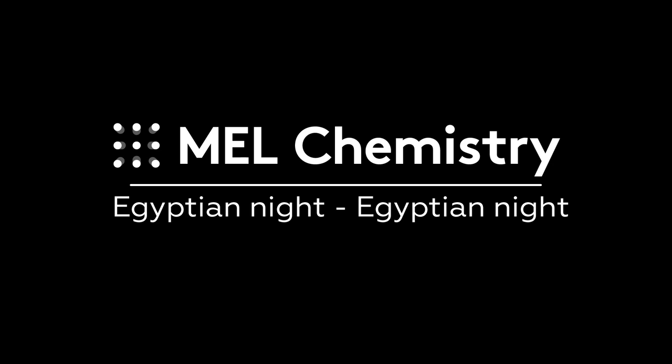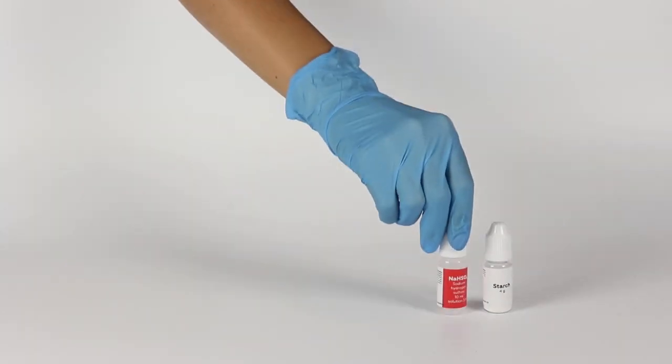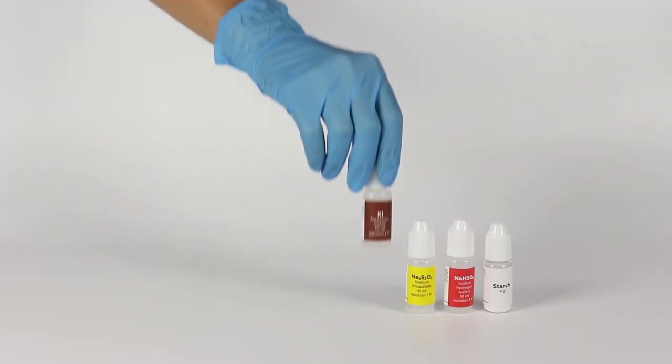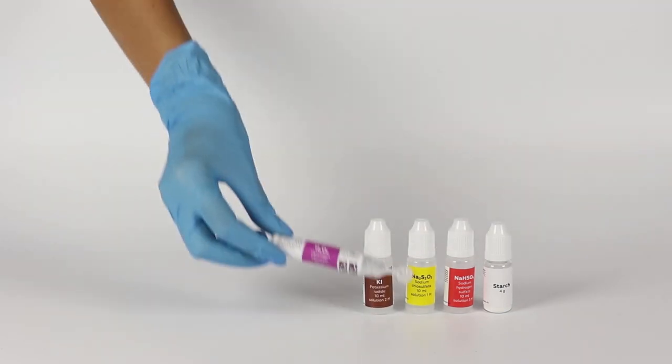For the Egyptian Night experiment, you will need some starch and solutions of sodium hydrogen sulfate, sodium thiosulfate, potassium iodide, and hydrogen peroxide.